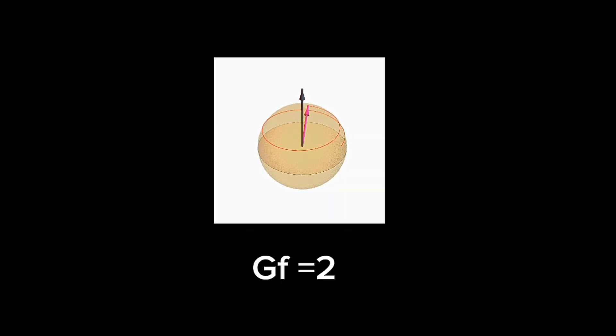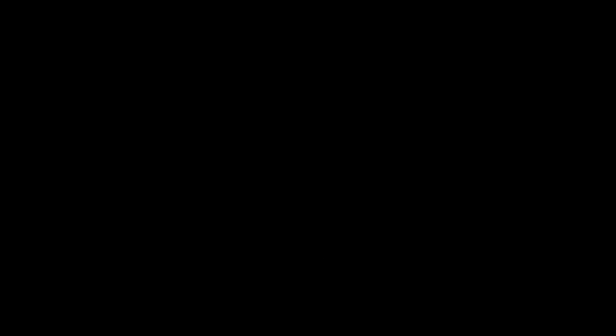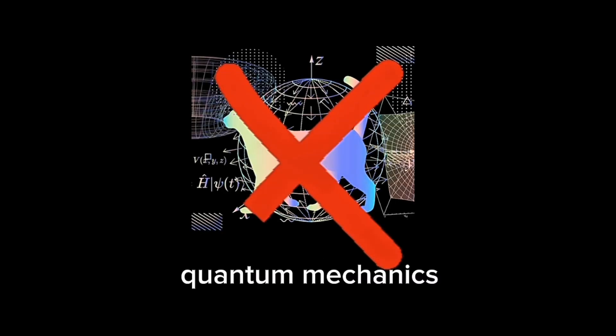Also, with the g-factor, the Kerr-Newman electron model predicts the magnetic moment of the electron correctly. But the main downfall of this theory is that it does not yet incorporate quantum mechanics into it.